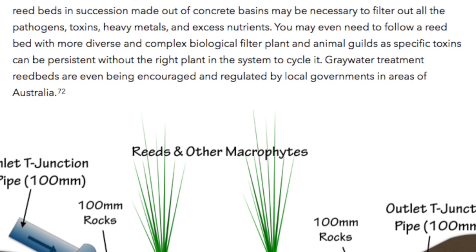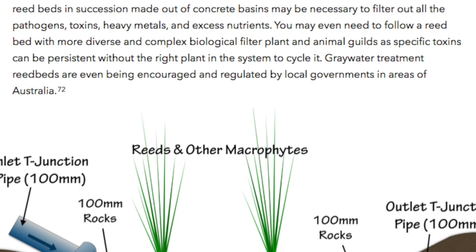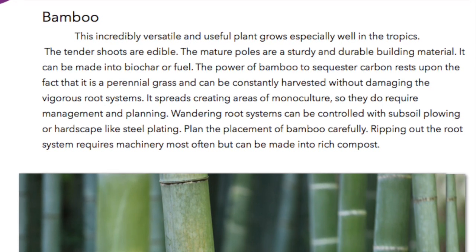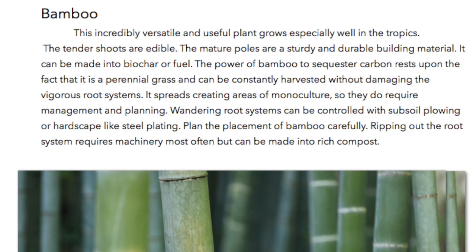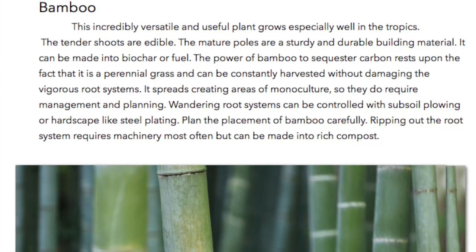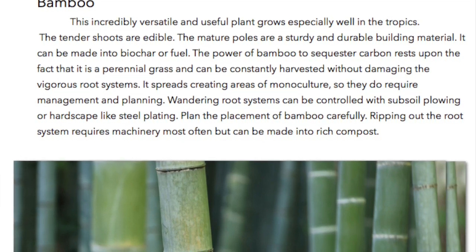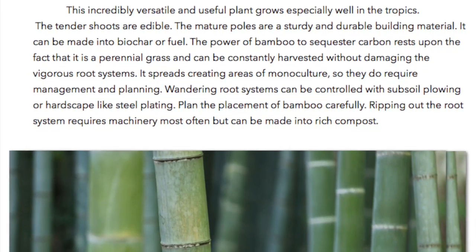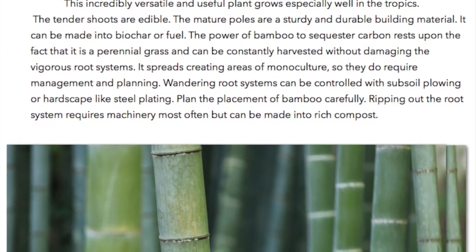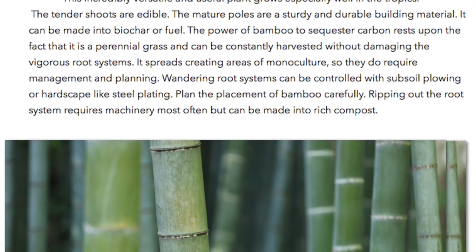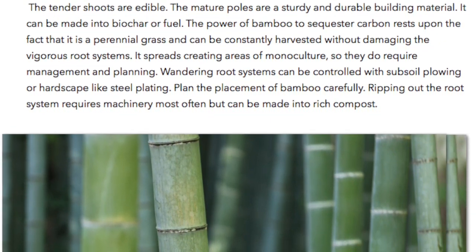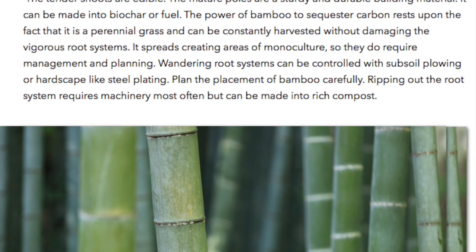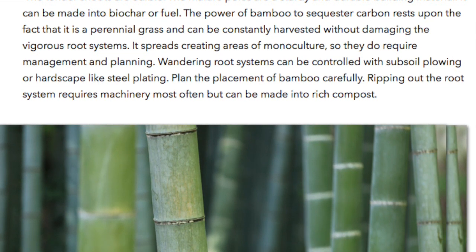Gray water treatment reed beds are even being encouraged and regulated by local governments in areas of Australia. Bamboo. This incredibly versatile and useful plant grows especially well in the tropics. The tender shoots are edible, the mature poles are a sturdy and durable building material, and it can be made into biochar or fuel. The power of bamboo to sequester carbon rests upon the fact that it is a perennial grass and can be constantly harvested without damaging the vigorous root systems. It spreads creating areas of monoculture, so it does require management and planning. Wandering root systems can be controlled with subsoil plowing or hardscape like steel plating. Plan the placement of bamboo carefully — ripping out the root system requires machinery most often, but it can be made into rich compost.